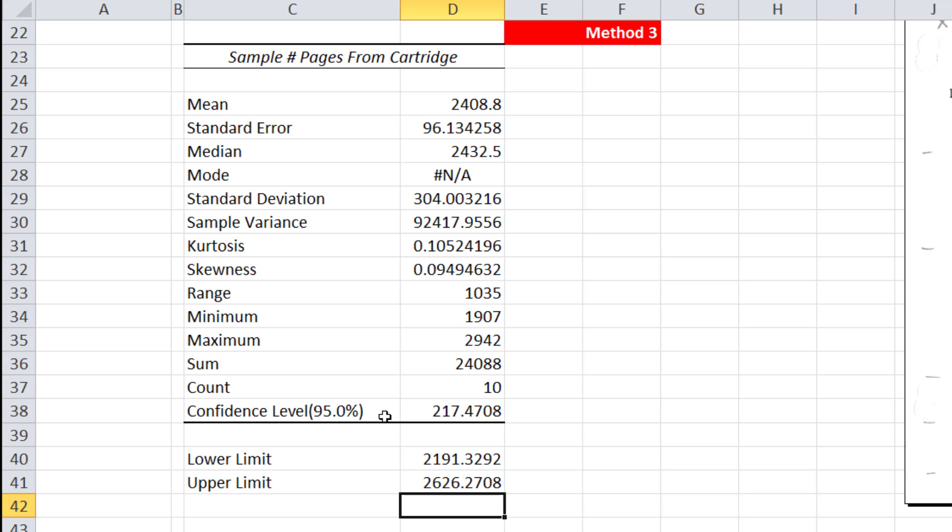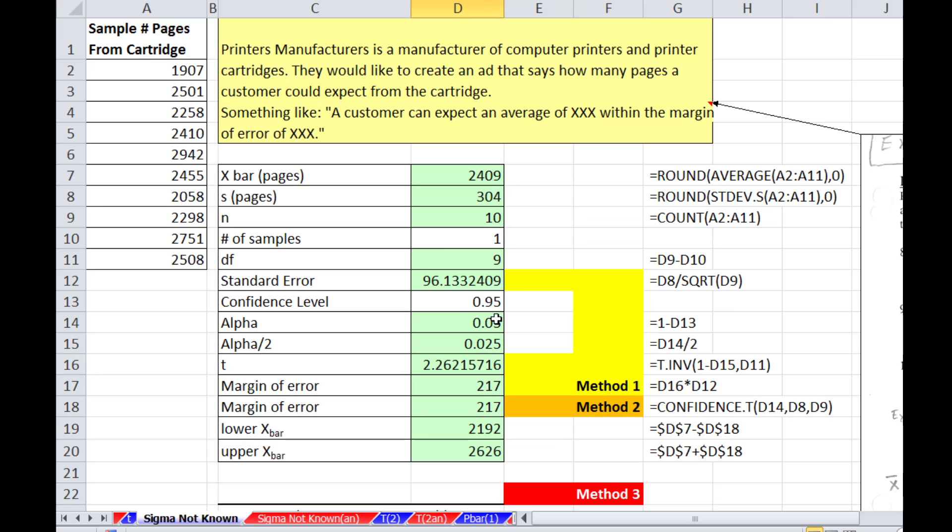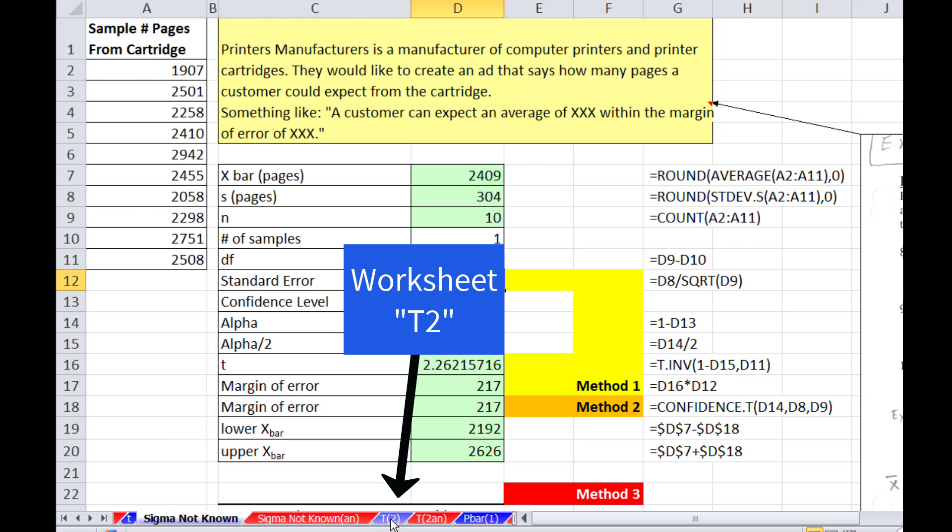But notice, confidence interval, if you put that in, it does the t distribution. So our conclusion would be a customer can expect 2,409 with a margin of error of 217 pages. So a customer can expect an average of 2,400 pages with a margin of error of 217. So that was our first example of the t distribution. Let's go over to t2.